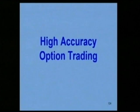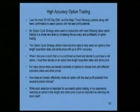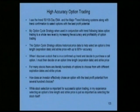I wanted to talk about high-accuracy option trading. I have a few general rules for selecting the strike price and the expiration month. My trade selection process uses trend following systems to identify a stock. Let's say in this case we're looking at an uptrending stock and I want to buy a call option, so I use the trend following systems along with trend confirmation to select the stock.